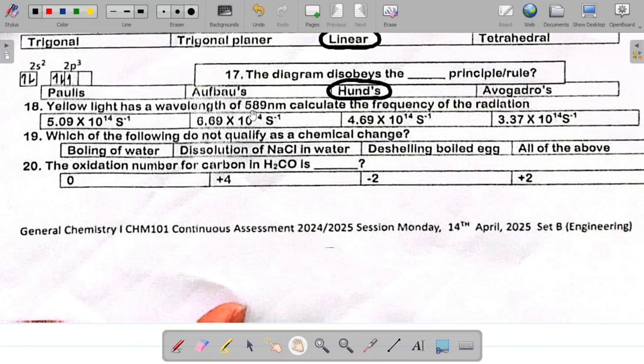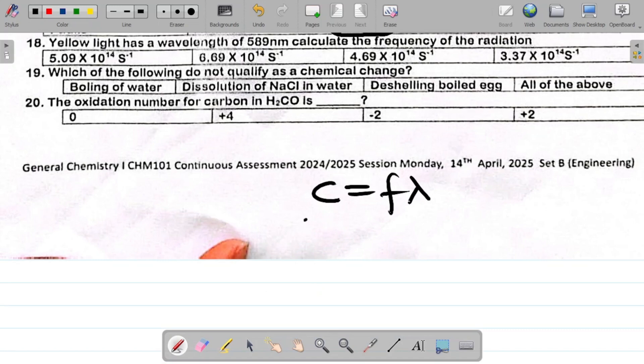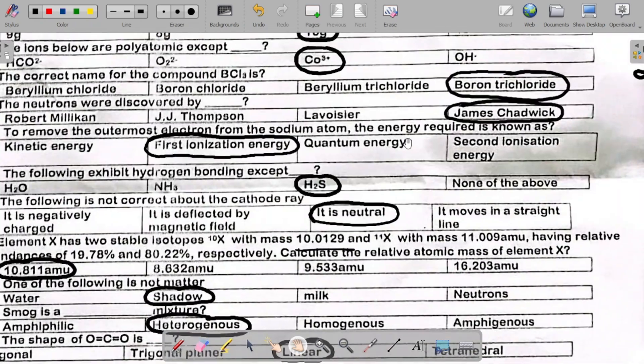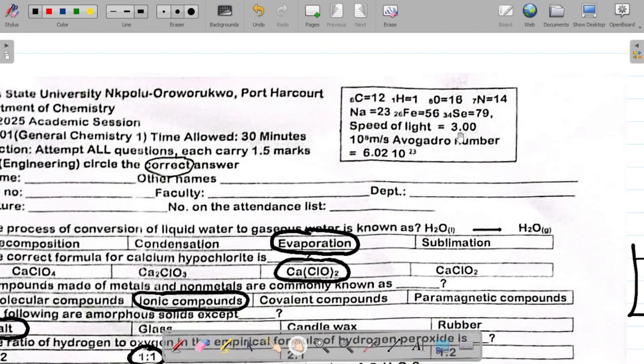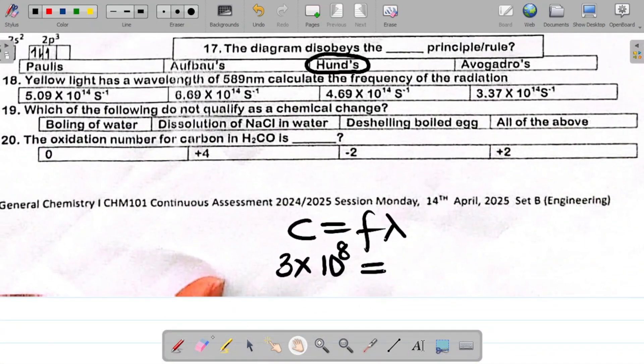Number 18 says yellow light has a wavelength of 589 nanometer. The frequency of the radiation is. What we know is that for light, we have that speed of light, C, is equal to F times lambda. Now we know that C is a constant, 3 times 10 to the power 8. Speed of light equal to 3.00 times 10 to the power 8. It's equal to the frequency which we are asked to find, times wavelength. They give the wavelength as 589 nanometer. This small n shows nano. And nano is simply times 10 to the power minus 9.